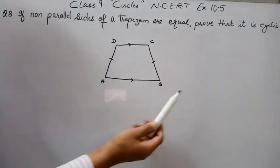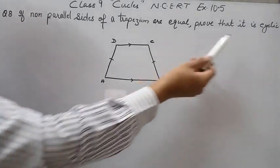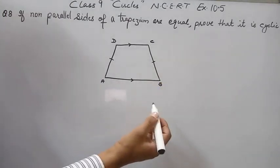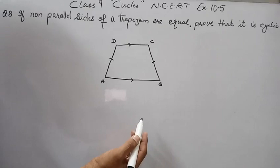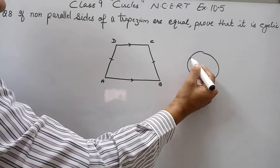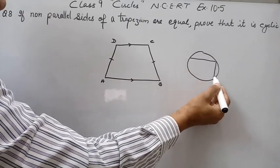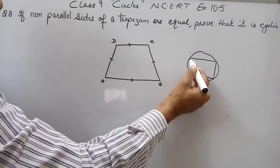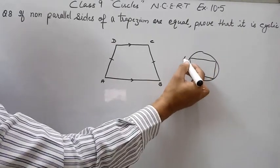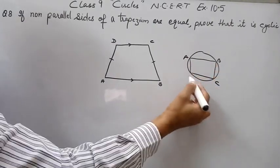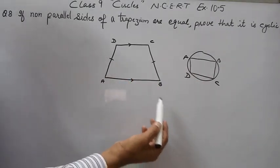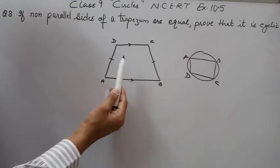We have to prove this trapezium is a cyclic quadrilateral. A cyclic quadrilateral is a quadrilateral in which all four vertices lie on a circle. So ABCD is a cyclic quadrilateral. We need to know the property of a cyclic quadrilateral and how we can prove it as one.